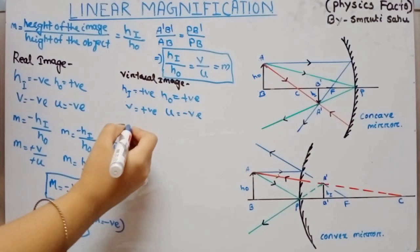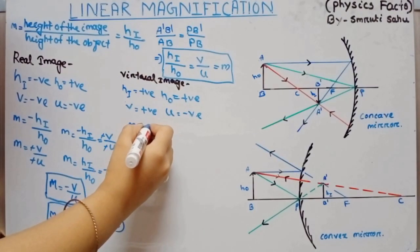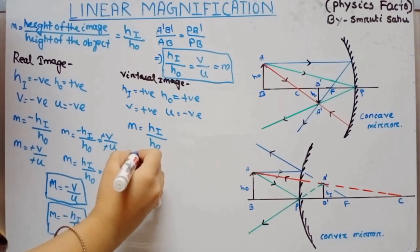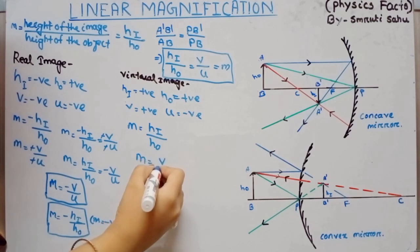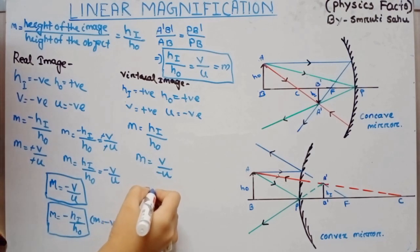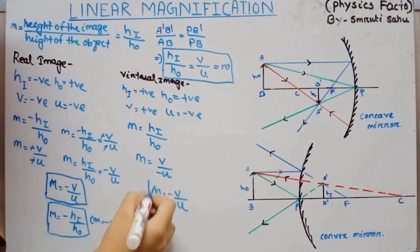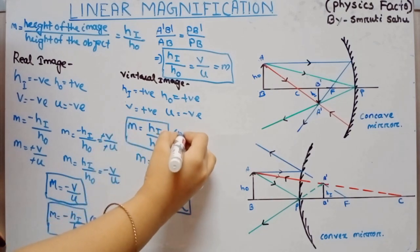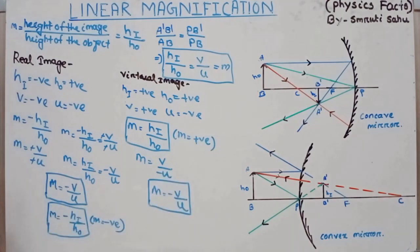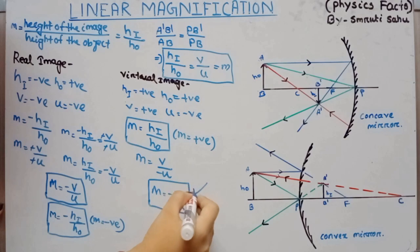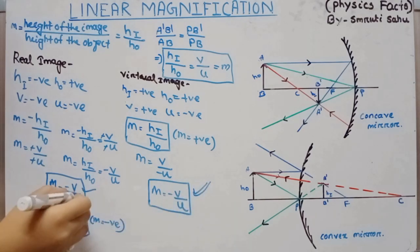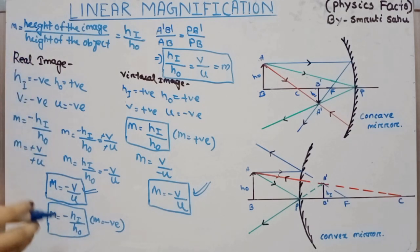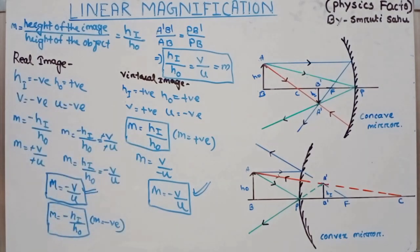Putting all the sign conventions: M equals positive HI by positive HO, and M equals positive V by minus U, giving M equals minus V by U. In case of a virtual image, magnification is always positive. Key points to remember: M equals minus V by U, real image magnification is always negative, and virtual image magnification is positive.